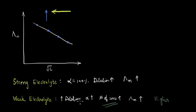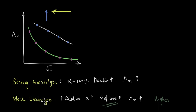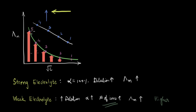For a weak electrolyte, the trend is again the same: on increasing the dilution, the number of ions increases and therefore molar conductivity increases. If we plot the experimental data, we see they follow a hyperbolic-type curve. As we move from right to left, concentration decreases and dilution increases, and the corresponding lambda m values, marked with pink dots, increase. There is one more thing to note: in the case of a strong electrolyte, going from points 1 to 4, the increase in molar conductivity is very gradual. But for the weak electrolyte curve, the change in values from points 1 to 4 is much higher.